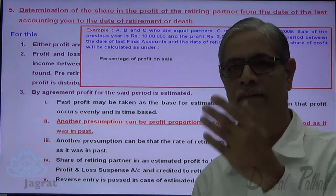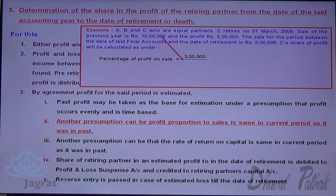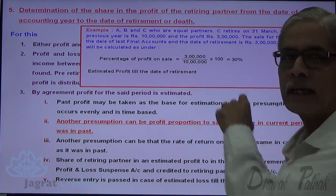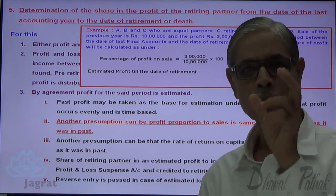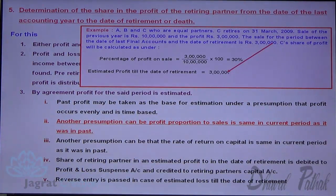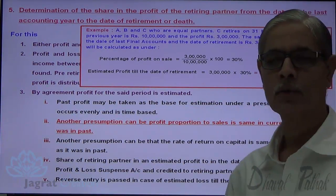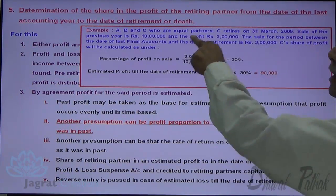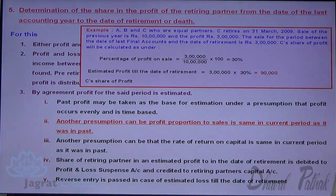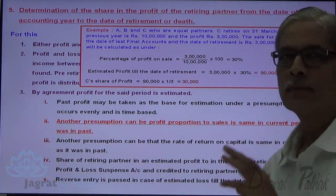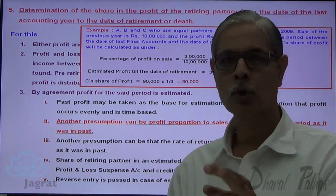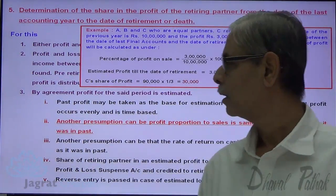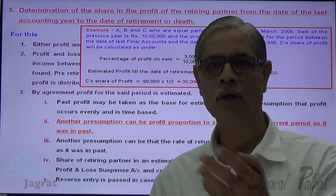Percentage of profit on sales for the previous period: ₹3,00,000 ÷ ₹10,00,000 × 100 = 30%. Estimated profit for the period till the date of retirement: 30% applied to sales of ₹3,00,000 = ₹90,000. C's share (one-third): ₹90,000 × 1/3 = ₹30,000. Journal entry: Profit and Loss Suspense Account Dr. ₹30,000 To C's Capital Account Cr. ₹30,000. This is how this presumption and the illustration are explained.